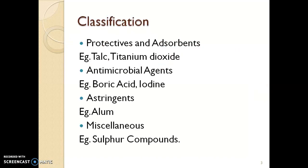Now we will see the classification of topical agents. Topical agents can be classified into four different types. First is protectives and adsorbents — example: talc, titanium dioxide. Second class is antimicrobial agents — examples: boric acid, iodine. Third class is astringents — example: alum. And the last class is miscellaneous compounds, meaning compounds that do not fit in the above three classes go into miscellaneous — examples include different sulfur compounds.